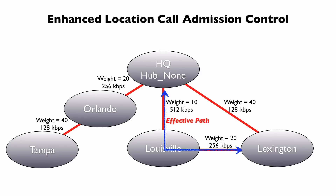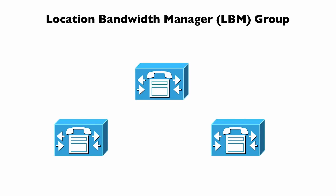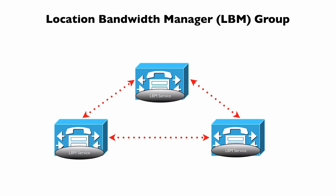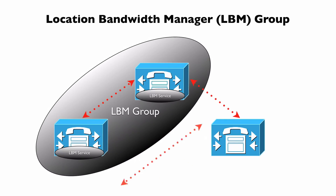For this to work, we have to be running a service on our Communications Manager servers called the LBM — the Location Bandwidth Manager. Consider three Communications Manager servers in a cluster: we could run the LBM service on all of them and they could communicate with one another, having full knowledge of the topology. Alternatively, if we didn't want to run LBM on every server, we could dedicate a subset of servers to run it, put them in an LBM group, and have the remaining servers simply point to that LBM group.